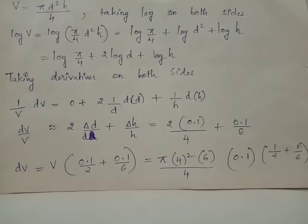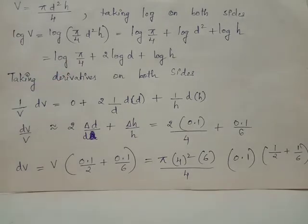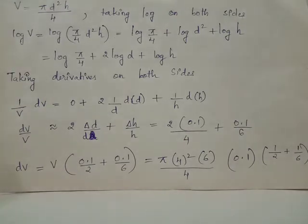Since log(abc) = log a + log b + log c, we have log(π/4 × d² × h) written as log(π/4) + log(d²) + log h. And log(d²) is rewritten as 2 × log d. When you take the derivative on both sides of this equation, derivative of log V with respect to V is obtained as (1/V) dV.